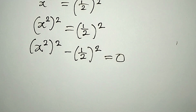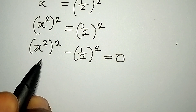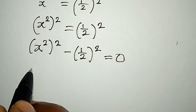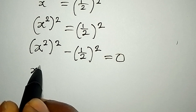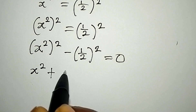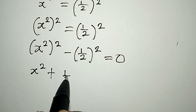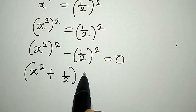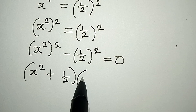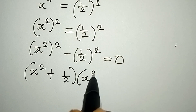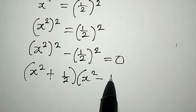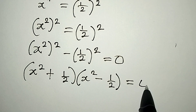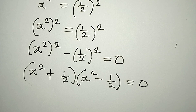We can now apply the difference of two squares, so that we have x squared plus 1 over 2, times x squared minus 1 over 2, and this is equal to 0.